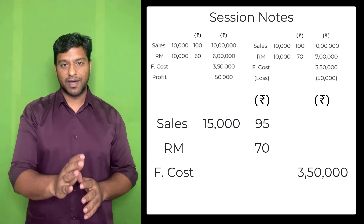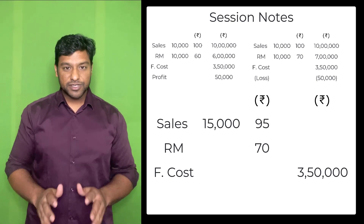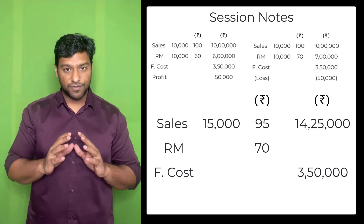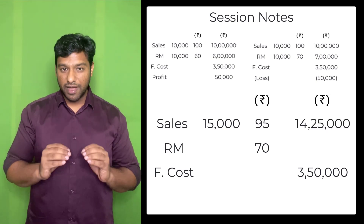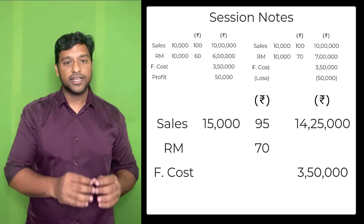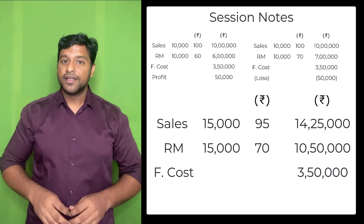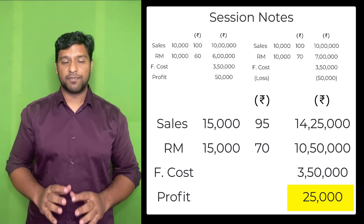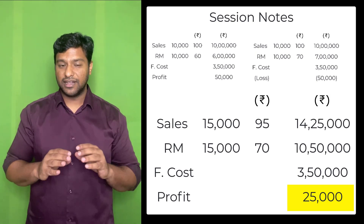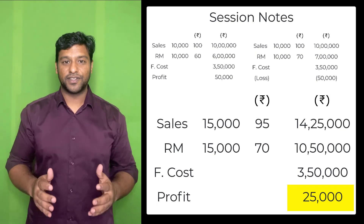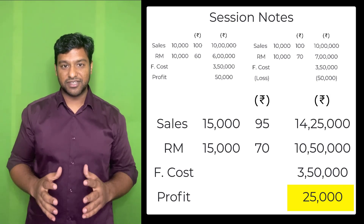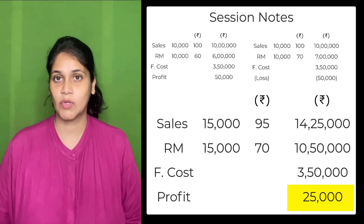...we will be able to push 15,000 units into the market. So our sales will increase to 15,000 × ₹95 = ₹14,25,000. Raw material cost will also increase since units are more — 15,000 × ₹70. After considering fixed costs, the profit left will be ₹25,000. I know, ma'am, this is not as much as last year's ₹50,000 profit, but considering the raw material price increase, this sounds like a good option. Good work, Yash.